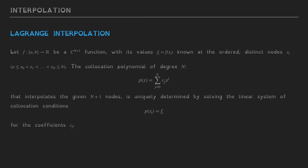Let's suppose that we have a function f, a real function defined in the interval a to b, and let's suppose that it's a smooth function up to some degree n plus 1. Let's suppose that we know the function values at a set of distinct nodes xi, and the function values are f of xi, which we will denote as fi for shorthand. We want to find the collocation polynomial that goes through this set of nodes. If we have n plus 1 points then the degree of that polynomial will be n.